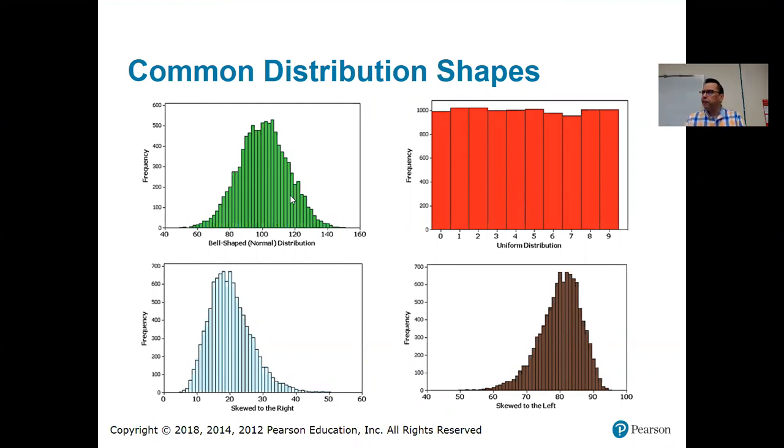So, the first example in green, this one on the top left, this is an example of a normal distribution. I think we talked about normal distributions. I think that was in the last section. So, just a reminder, a normal distribution is one where it starts off small with small frequencies, peaks somewhere around the middle, and then drops back off small again toward the top. And they are roughly symmetric.